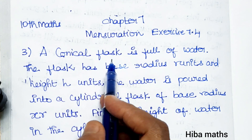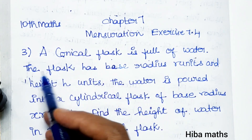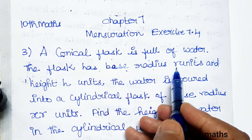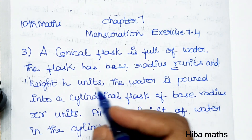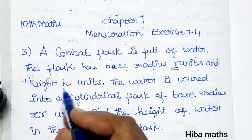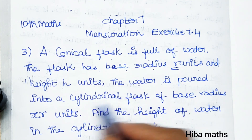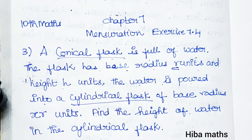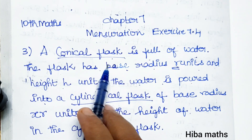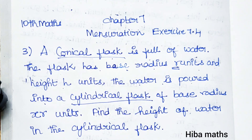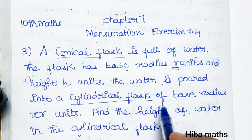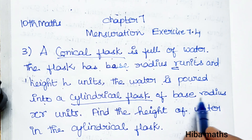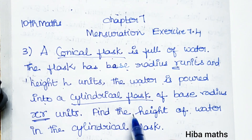A conical flask is full of water. The flask has base radius r units and height h units. The water is poured into a cylindrical flask of base radius xr.